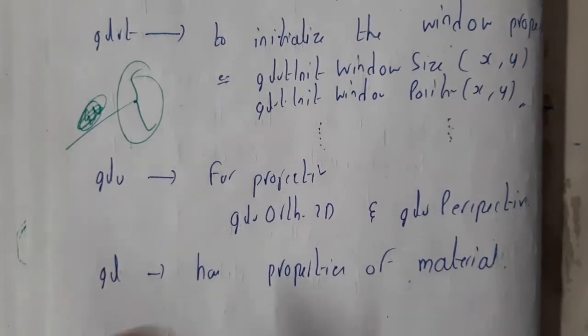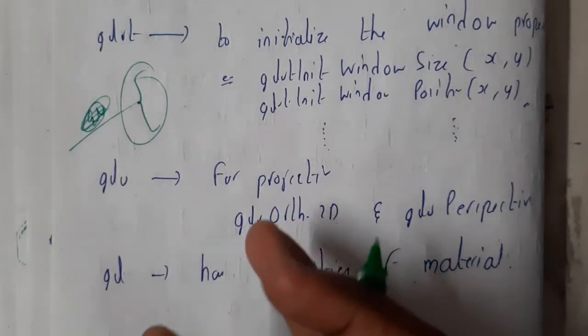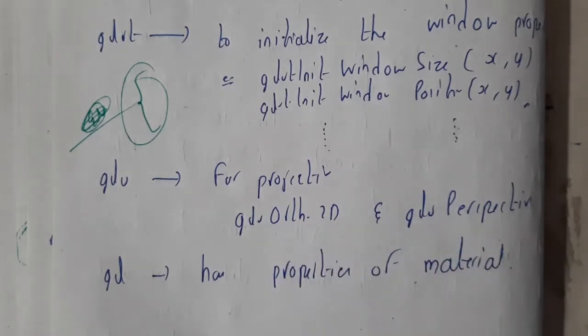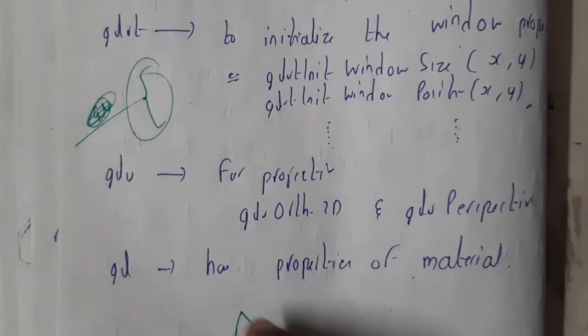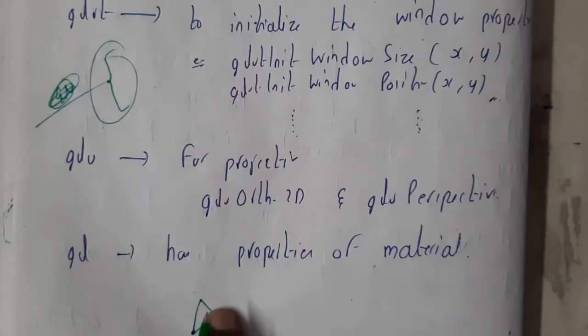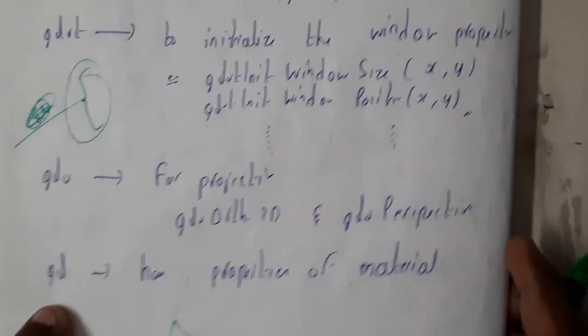We also have GL. GL is for attributes and primitives - like where the point is located, where you need to draw the lines, where you need to draw everything. Those are denoted by GL.